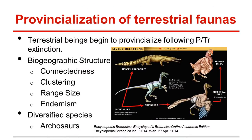According to the study, terrestrial faunas began to provincialize following the Permian-Triassic mass extinction. To analyze the distribution of tetrapod faunas, researchers looked at four components of biogeographic structure: connectedness, clustering, range size, and endemism.